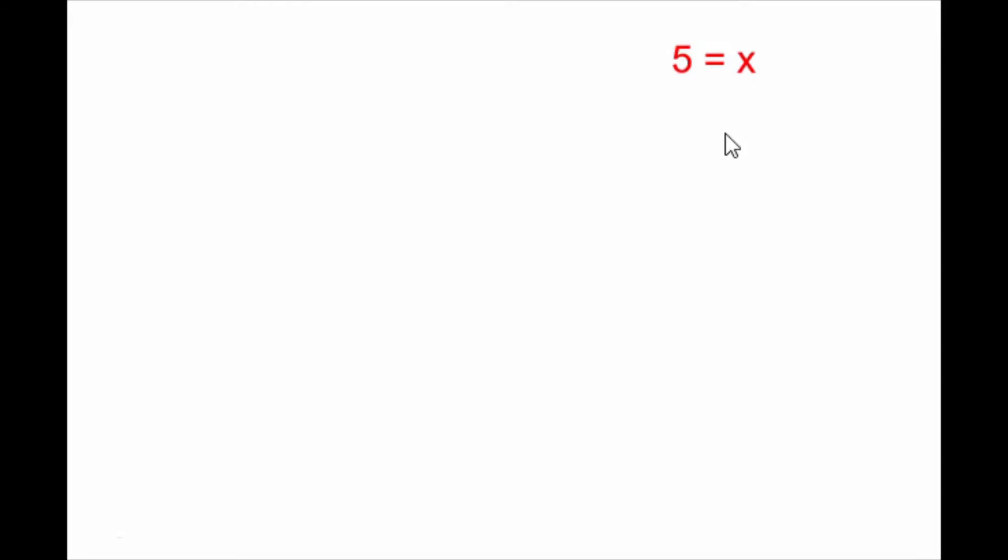Doing algebra to this, I can decide to subtract an x from both sides. Anything you do on one side has to be done on the other. So if I subtract an x from both sides, these x's cancel and my next line is 5 minus x equals 0.